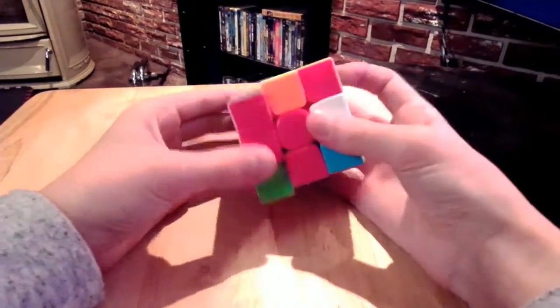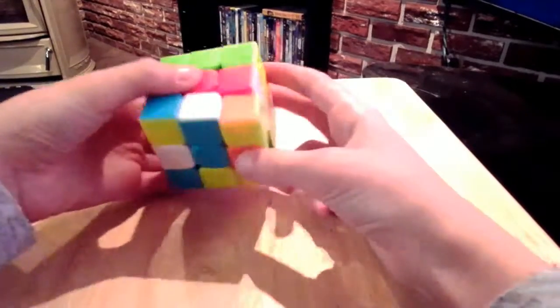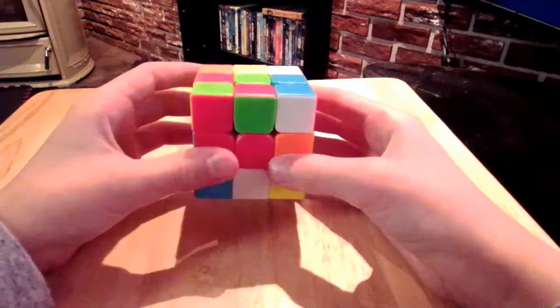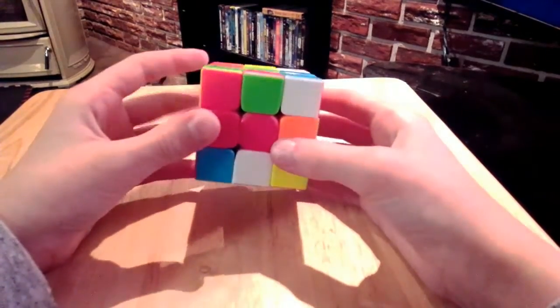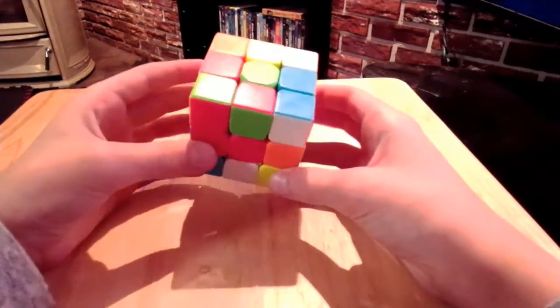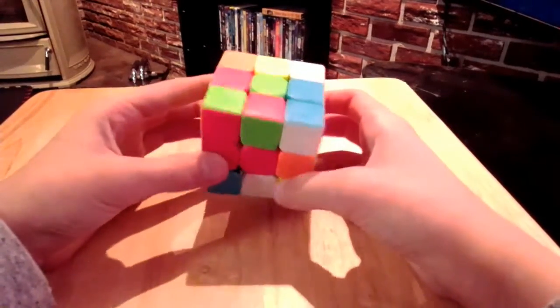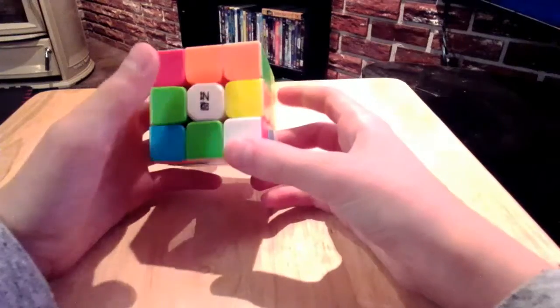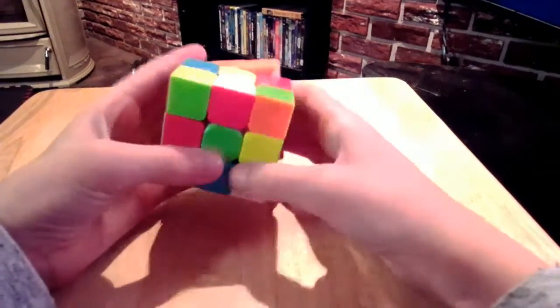Once you have a scrambled up cube, any old cube will work, you can start to do this cross. Now there are many other more effective ways, but this is a Beginner's Tutorial, so I'm not going to go into all those. What you want to do to start is find the white side and put that on the bottom.